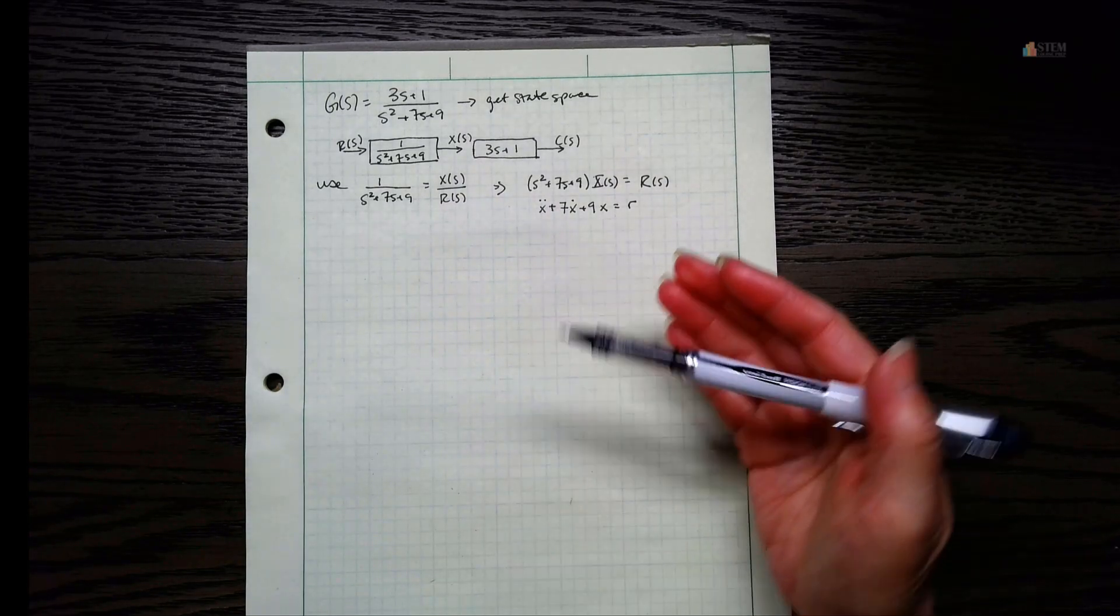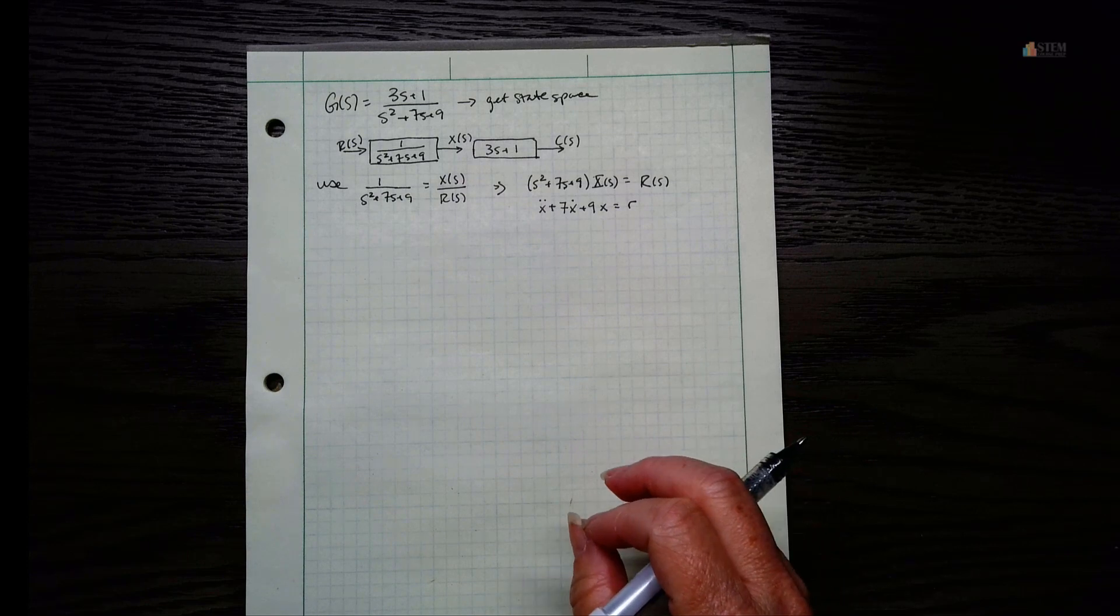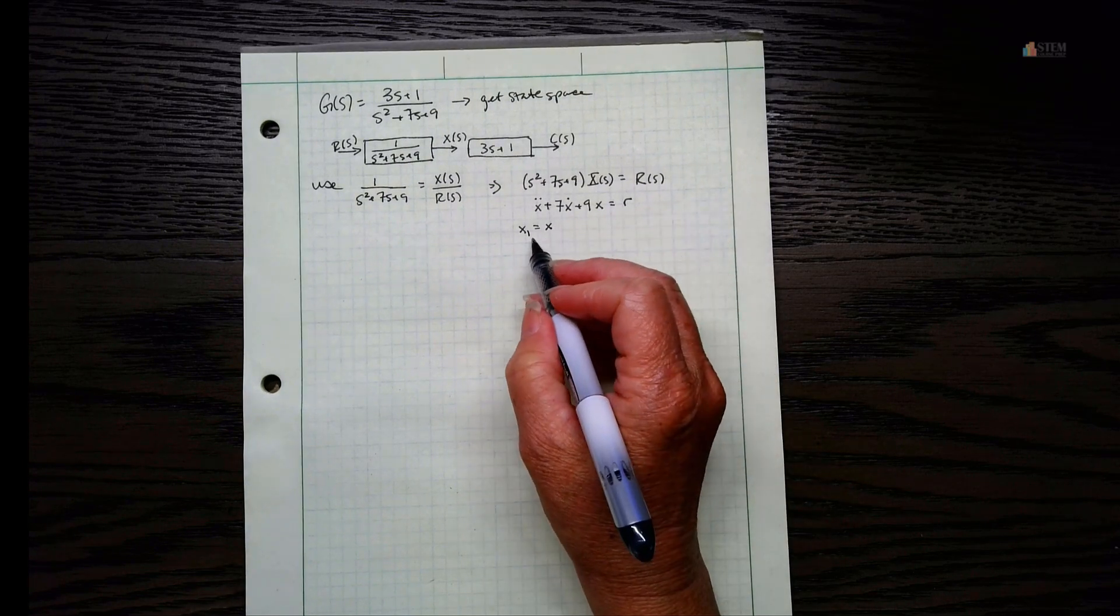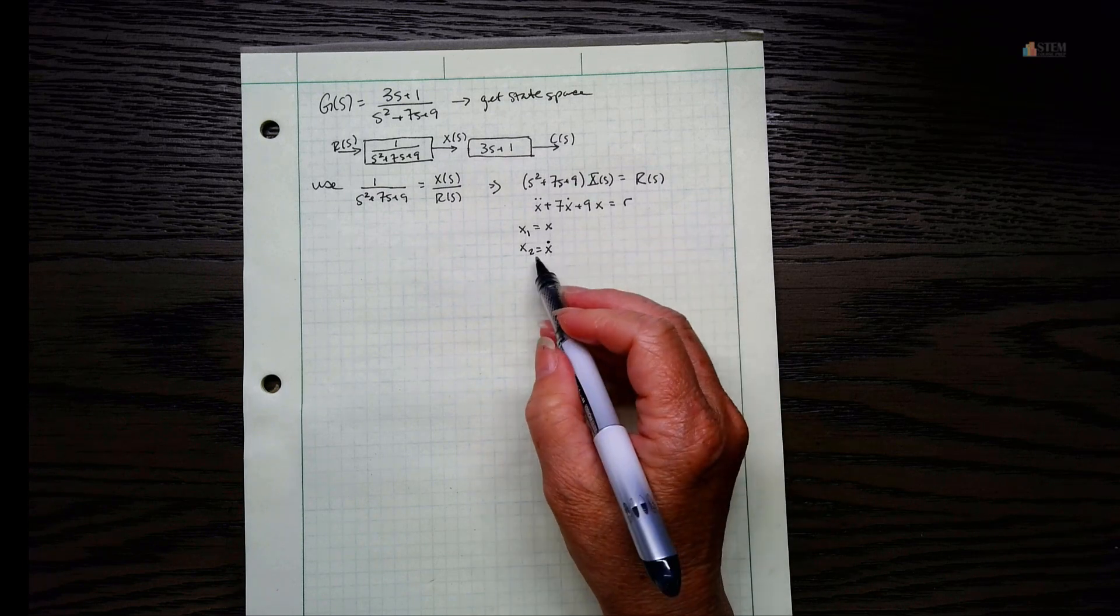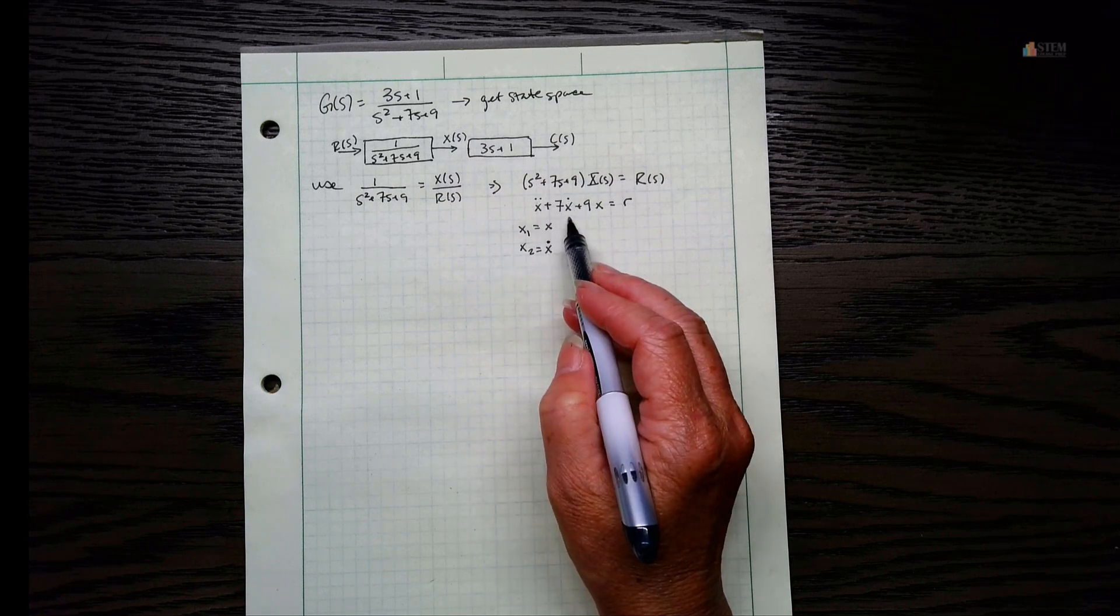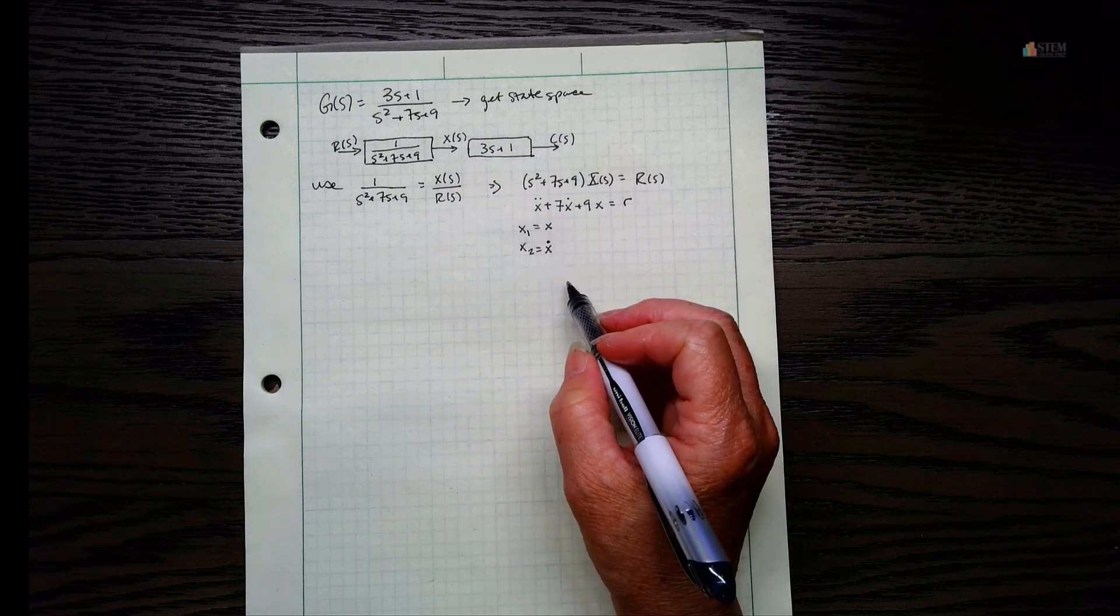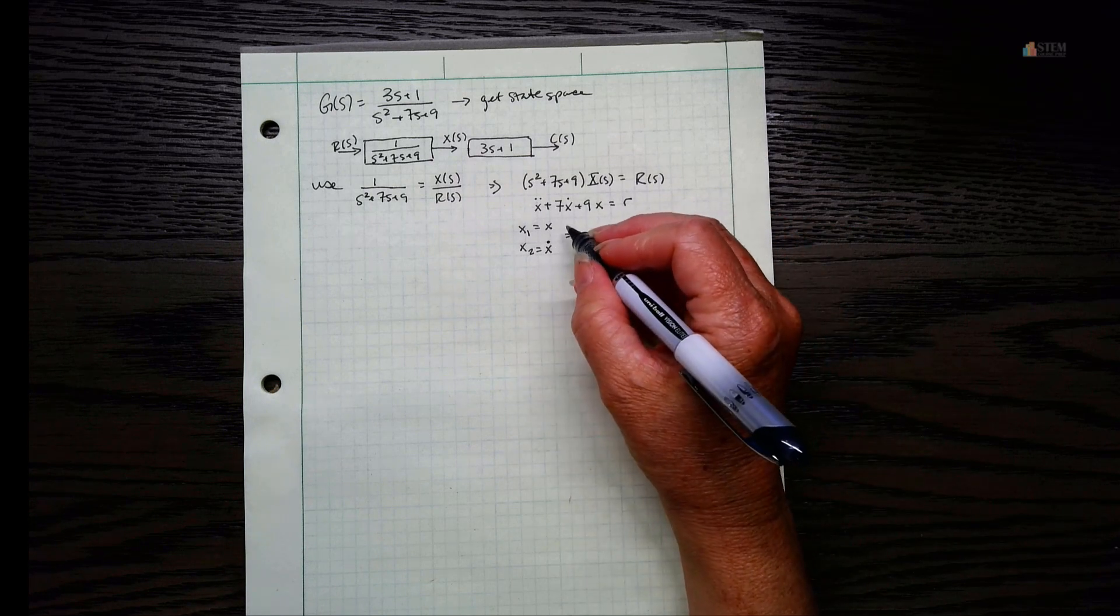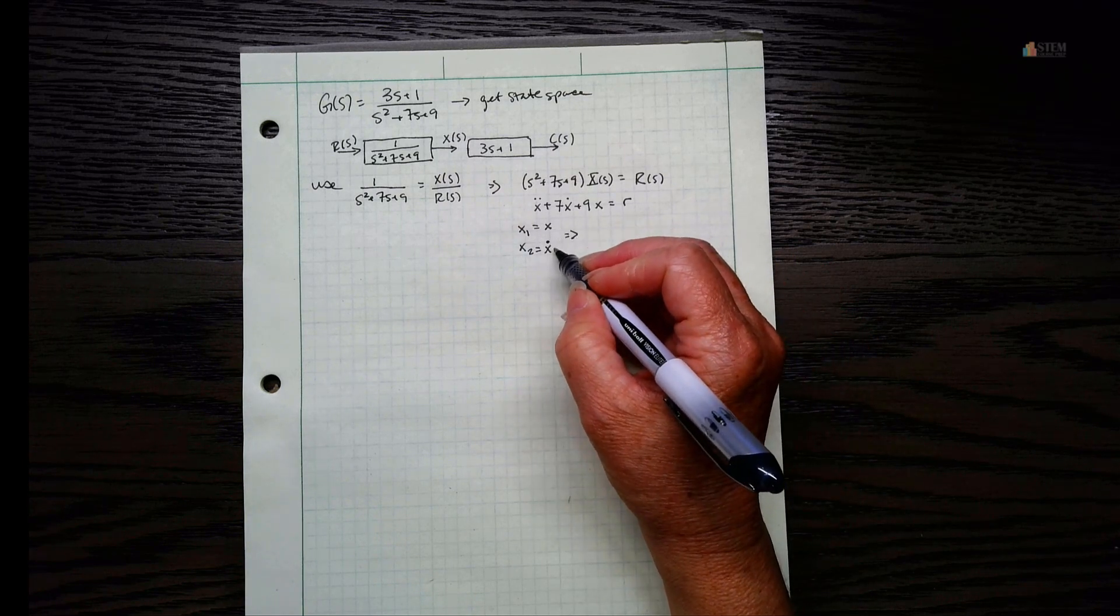So now I've got this expression here, a little differential equation. And we want to get it into state space. So what we're going to do is create our state variables. And we want to create our state variables so that we have one for each term. So X1 equals X, and then let's do X2 equals X dot. So we want to have one for each term until we get to the N minus one derivative term.